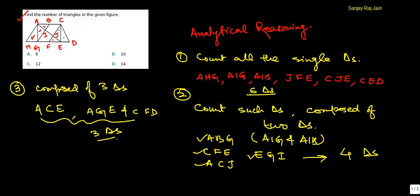So step 4. The next step would be to count the triangles which are composed of 4 triangles. And if you notice very carefully, there is only one triangle, A, H, E, that consists of 4 triangles. So there is only one such triangle.